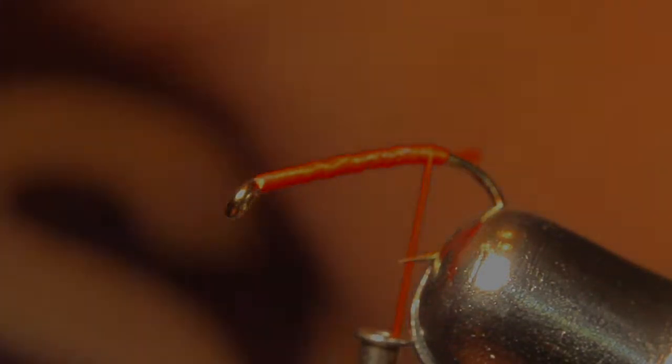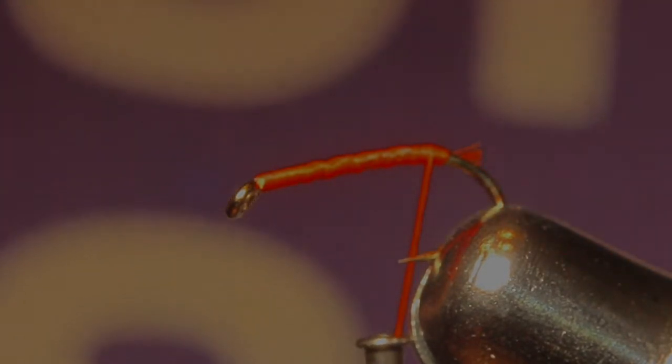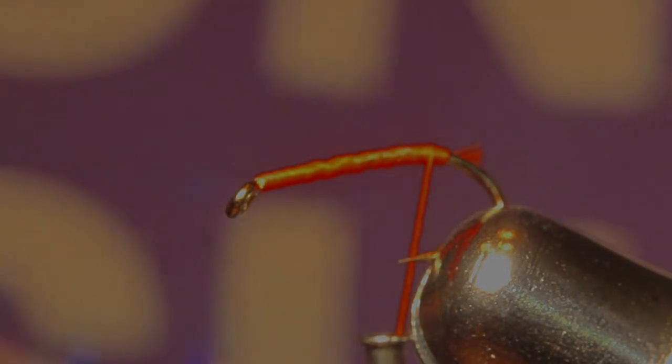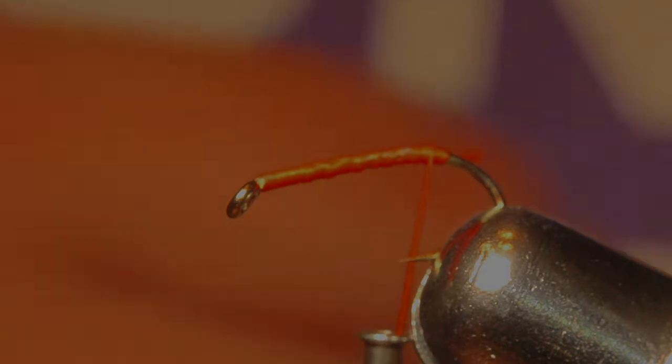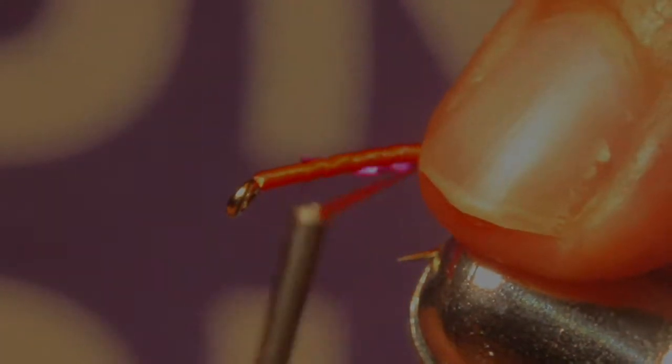And then you're going to take medium hollow purple tinsel flashaboo, really great stuff. And you're going to attach it onto your hook.